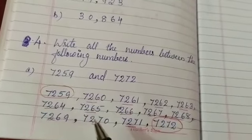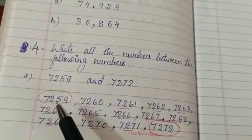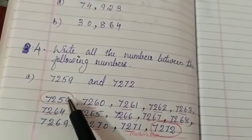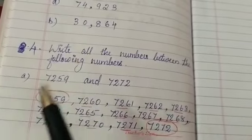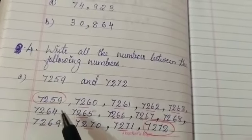So, how we find the numbers? See, only these numbers is changing. Hundred and thousand places are same.